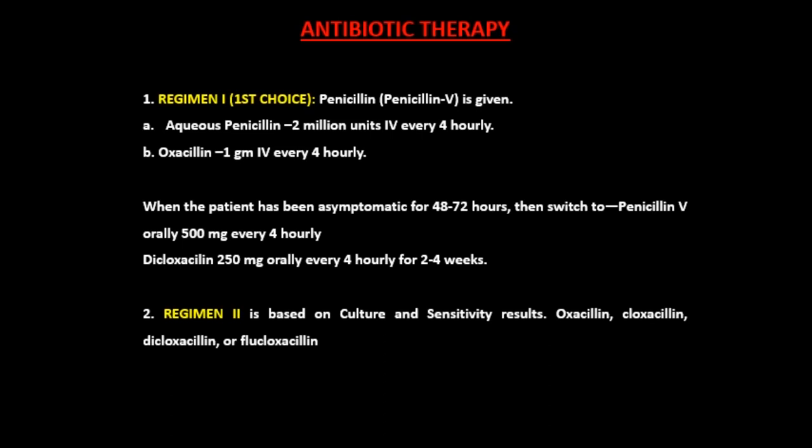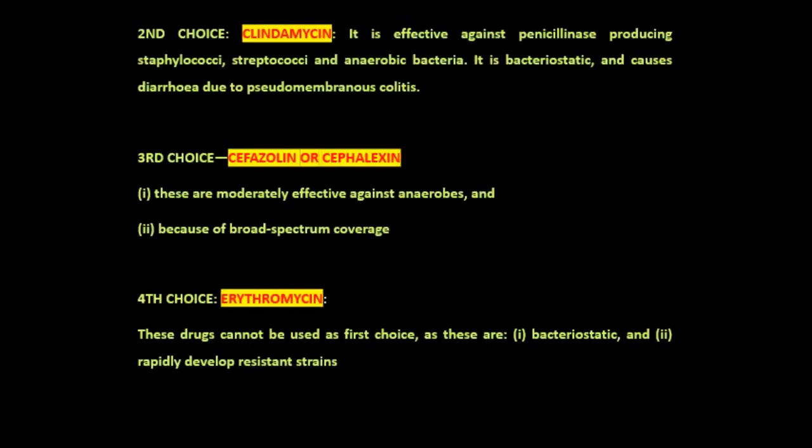Regimen 2 is based on culture and sensitivity results. Penicillinase-resistant penicillins like oxacillin, cloxacillin, dicloxacillin, or flucloxacillin may be given. Clindamycin is the second choice antibiotic, effective against penicillinase-producing staphylococci and anaerobic bacteria including bacteroides. It is used because of its ability to diffuse widely in bone, but is not recommended as first choice because it is bacteriostatic and can cause diarrhea due to pseudomembranous colitis.